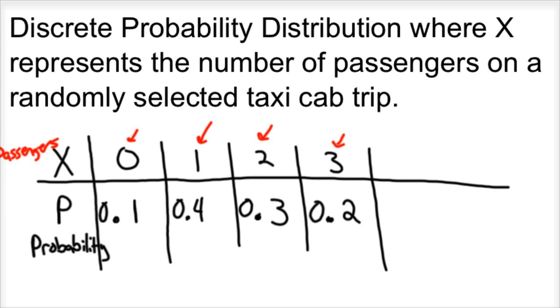Let's say the probability of having zero passengers in this randomly selected taxi cab ride is 0.1. The probability of one passenger is 0.4. The probability of two passengers is 0.3. And the probability of three passengers is 0.2.